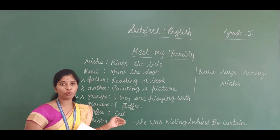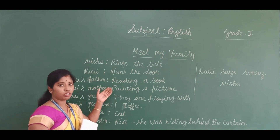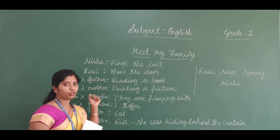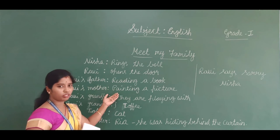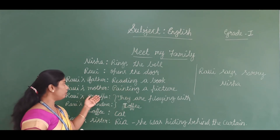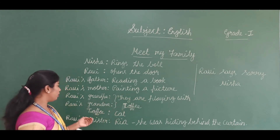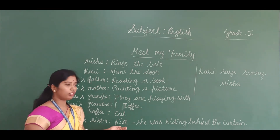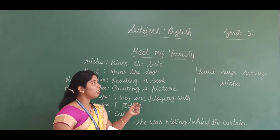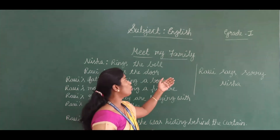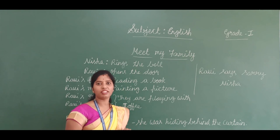Once again, shortly: Nisha rings the bell, Ravi opens the door and wants to introduce his family members. First he introduces his father; he is reading a book. Next he introduces his mother; she is painting a picture. Then he introduces Grandpa and Grandma; they are playing with Toffee. After that he introduces his sister Riya; she was hiding behind the curtain and is very naughty. She frightened Nisha, so Ravi says sorry to Nisha. I hope you all understand the lesson 'Meet My Family.' Thank you.